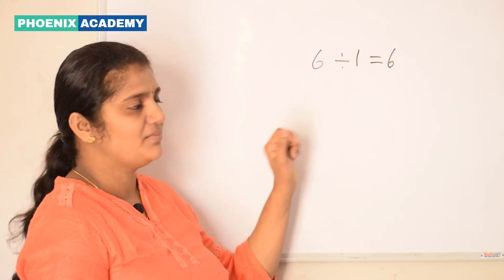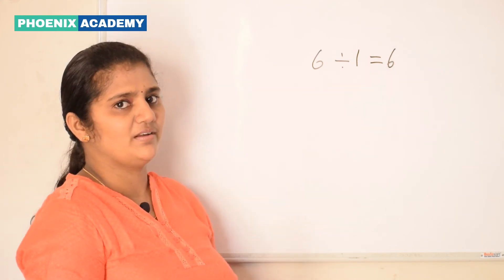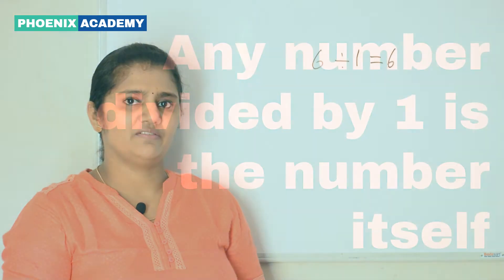When a number is divided by 1, the quotient is always the same number. This is the second property of division.